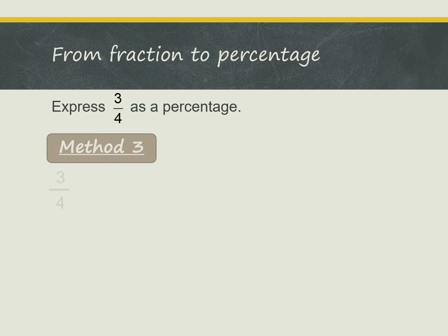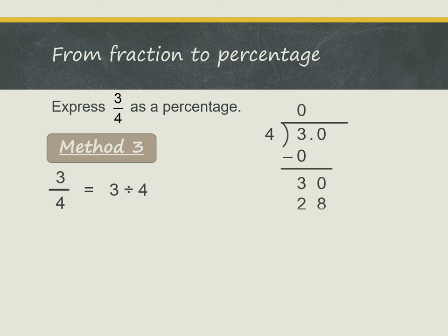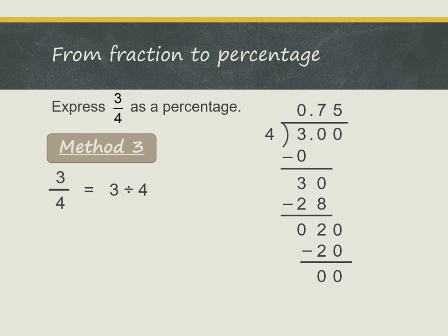In Method 3, we treat the fraction 3 over 4 as 3 divided by 4. So we are actually finding the decimal that represents 3 over 4. We can do the long division, and we get the answer 0.75. Now we can convert 0.75 to a percentage — we shift the decimal point two places to the right — and we get the answer 75%.